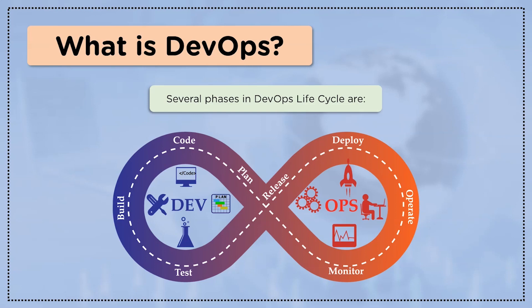Next comes the deploy and operate phase, where tools like Puppet and Chef are used to push ready applications to the deployment phase and continuously configure them to the right state. Then comes the monitor phase, where release products are continuously monitored — the most common tool used here is Nagios. The integration phase is the heart of DevOps, continuously automating the integration of all the different stages, with Jenkins being the most popular tool.